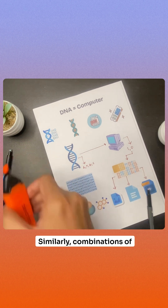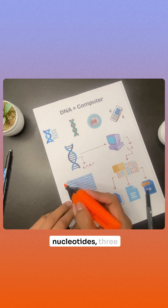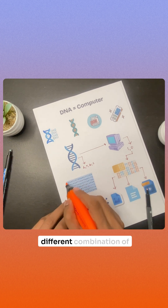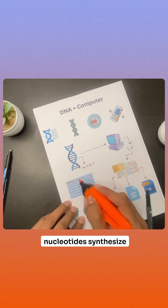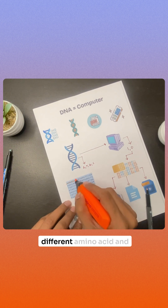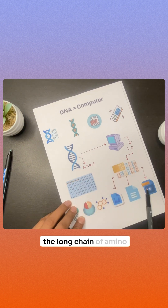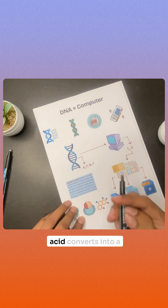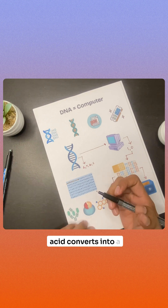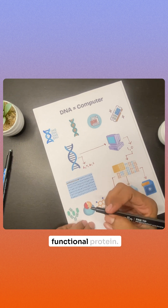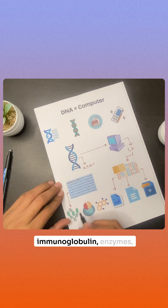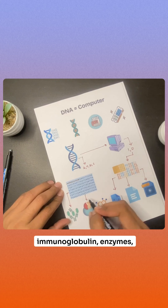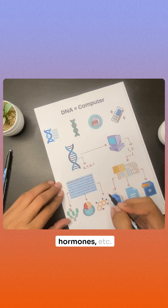Similarly, combinations of nucleotides — three different combinations of nucleotides — synthesize different amino acids, and the long chain of amino acids converts into a functional protein. These proteins might be immunoglobulins, enzymes, hormones, etc.